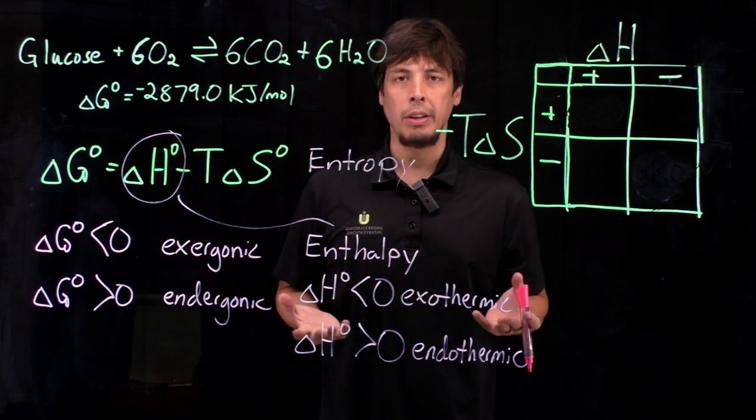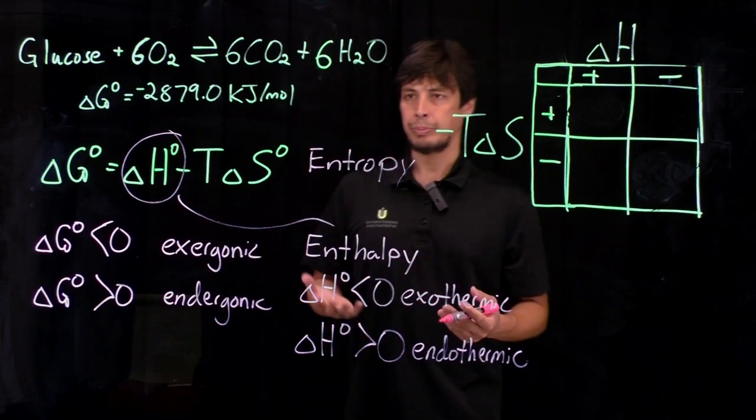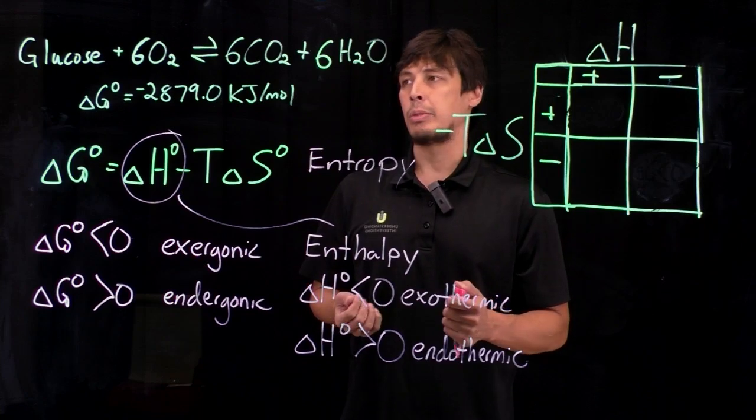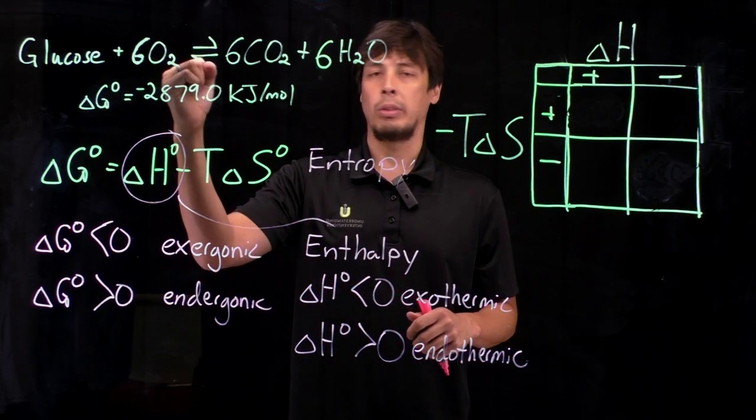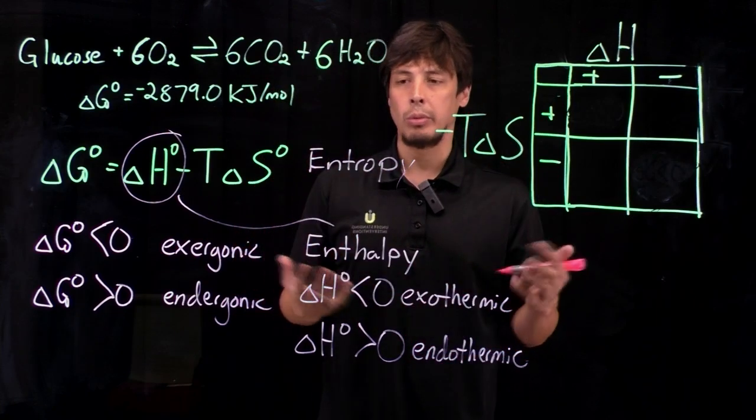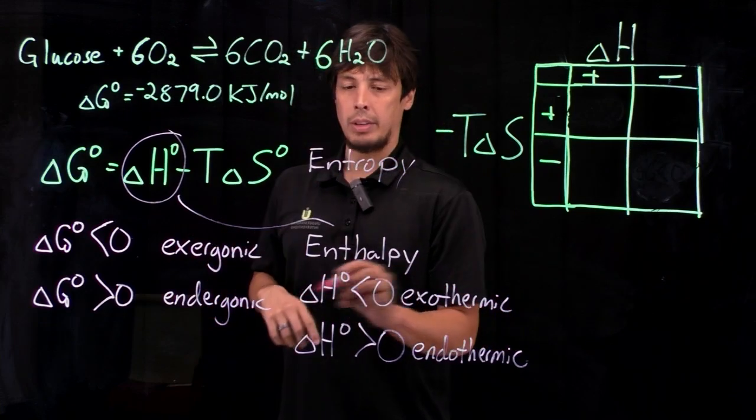As we know for combustion, you release a lot of heat. Think of burning wood or burning a piece of paper, which is one form of a combustion reaction. In the same way, glucose burning with oxygen as the oxidant forms carbon dioxide and water. We know that's going to release a lot of heat.